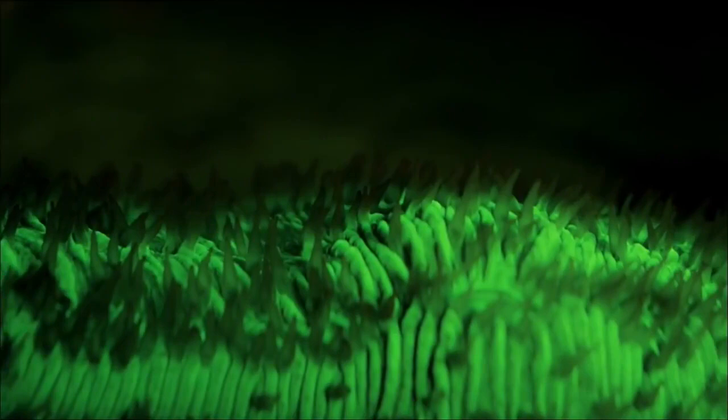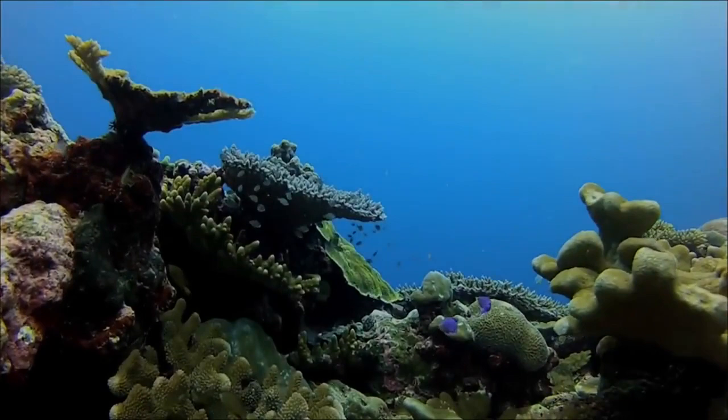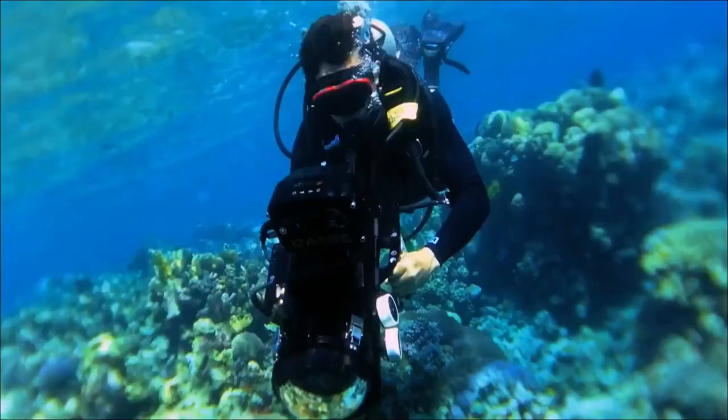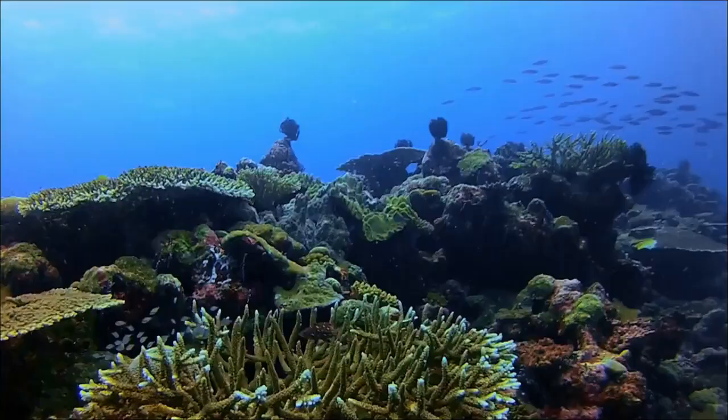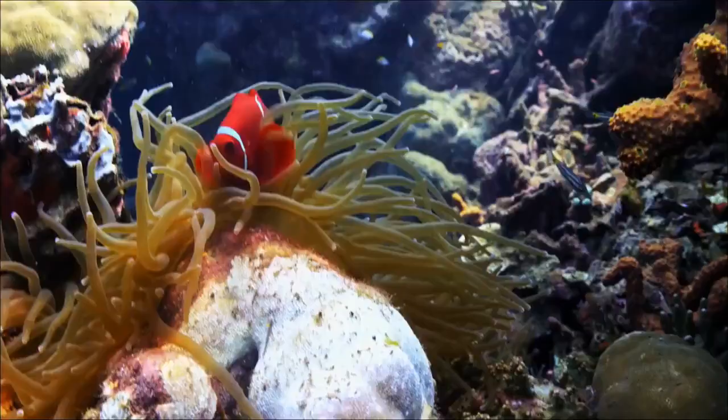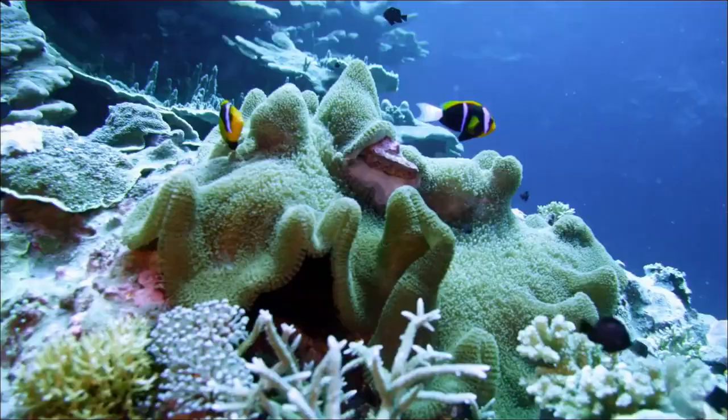So they take the blue light that's coming to them in the ocean and they convert it to greens and reds, and that gives them this color, this contrast. Depending on their chemical composition, different fluorescent proteins give off different colors, all of which can be hard to see. Without special filters, visible light can wash it out. That may explain why it's gone unnoticed for so long.